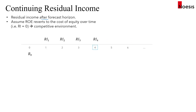If we assume that the return on equity will revert to the cost of equity, that means the residual income should be fading over time. This keyword is called fading or declining. We apply a factor with the effect of fading or decaying, called the persistence factor, or omega.